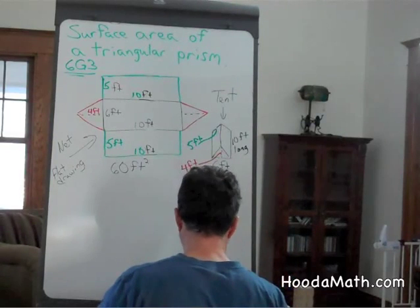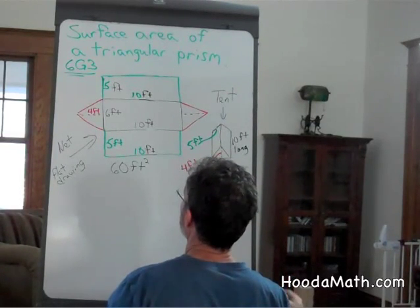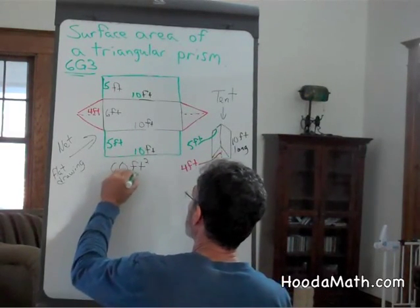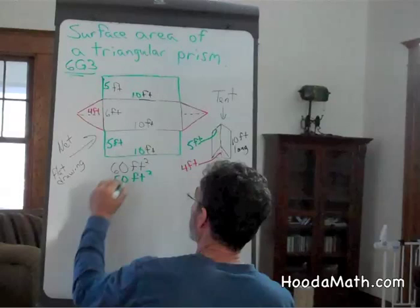The two sides of the tent are five times ten, or 50 square feet. There are two of them.